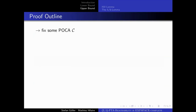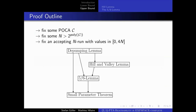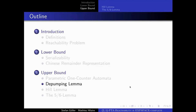How do we prove this main theorem? We fix a POCA C, a large n, and an n-run with values bounded by 4n. To prove the theorem we use different lemmas that are intricately linked and will allow us to modify the n-run bit by bit to turn it into an n'-run for smaller n'. The first is the de-pumping lemma, then the hill lemma, then the 5-6 lemma.